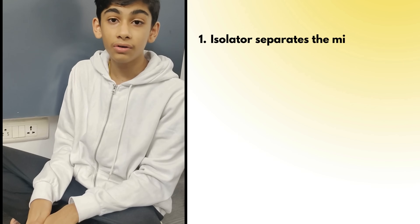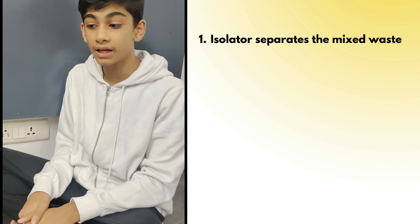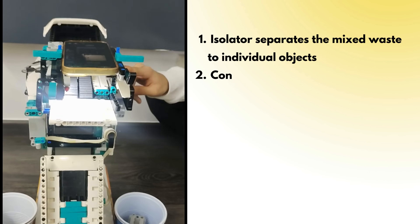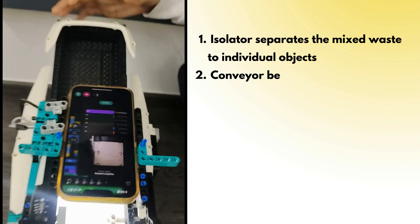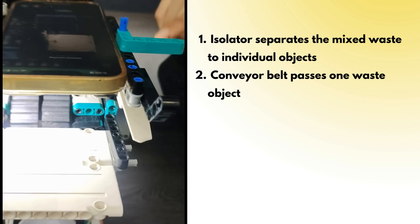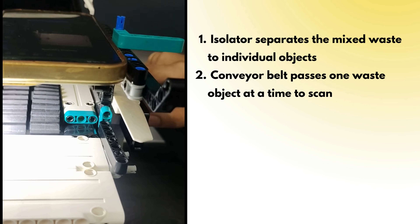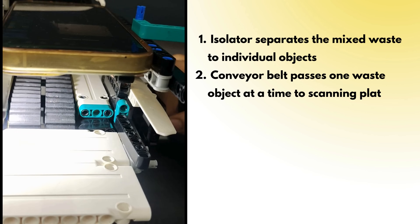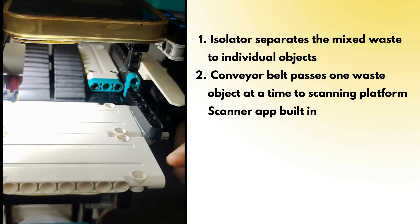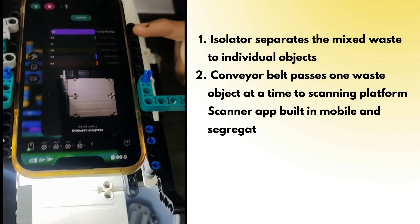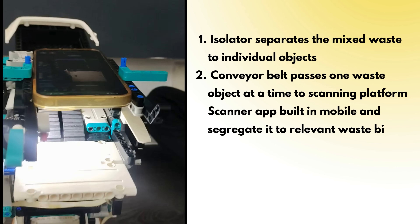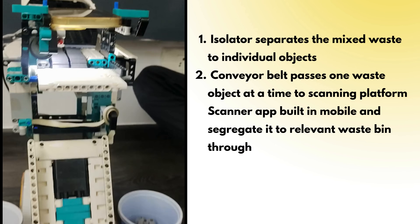This is our AI-powered versatile smart dustbin which separates the type of waste. We have attached an isolator which separates the waste, and beneath that we have attached a conveyor which transports the waste to the platform where it gets scanned. Above that we have attached a mobile phone which scans the type of waste. Let me give you a demonstration.